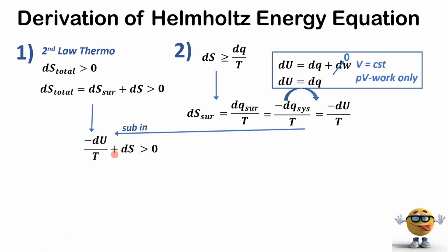This must be true, greater than zero for the process to be spontaneous, and we're going to multiply both sides by negative T to get dU minus TdS. It has to be less than zero.